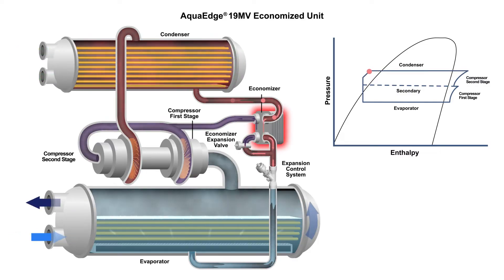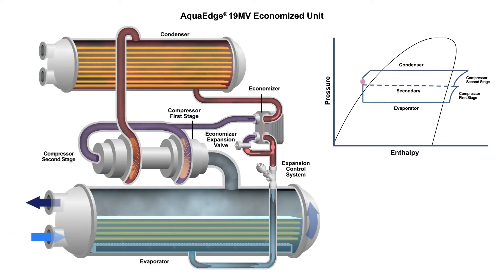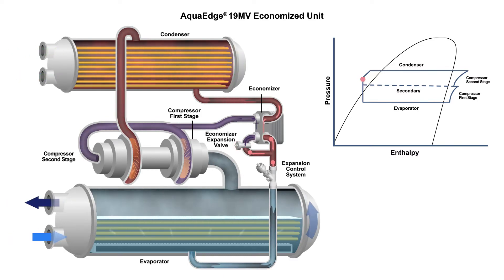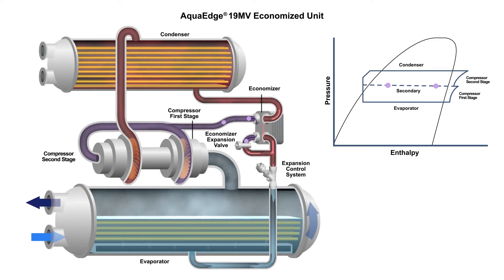In the economizer section, the refrigerant directly enters one side of a brazed plate heat exchanger. After passing through one side of the heat exchanger, the high-pressure liquid refrigerant is divided, creating a secondary flow which is directed through an expansion valve. The liquid refrigerant's secondary flow is reduced to an intermediate pressure and then fed into the other side of the heat exchanger. The secondary flow boils into a vapor, absorbing energy from the primary flow through the plates in the heat exchanger. The high-pressure primary flow refrigerant is cooled, which increases its capacity to absorb heat in the evaporator.